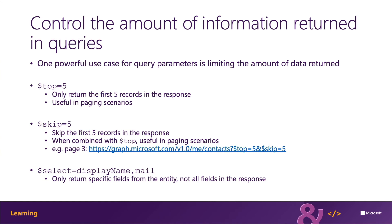Microsoft Graph responses will include a set of default properties when no result set has been defined. Including default properties means that if you only want the display name and the email address of many users, you'll actually receive a lot more data that isn't going to be used. To optimize the request and speed up the responses, you can use the select parameter to specify a comma-delimited list of properties that you want to receive in the response.